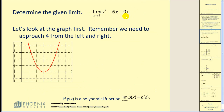Let's take a look at the limit as x approaches 4 of x squared minus 6x plus 9. We know we have to approach the value of 4 from both sides, the left and the right. If we take a look at the graph first, we can see that as we approach from the right and from the left, we're essentially approaching this point on the function. Since this point is on the function, we could find the y value by performing direct substitution. So essentially this limit will be equal to f of 4.